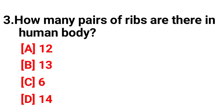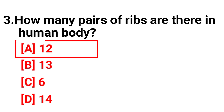Question number three: how many pairs of ribs are there in the human body? The correct answer is option A, 12.